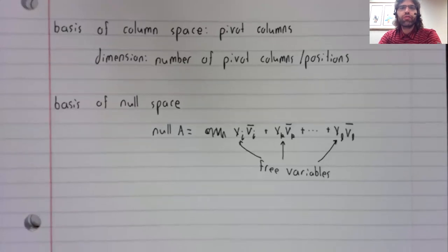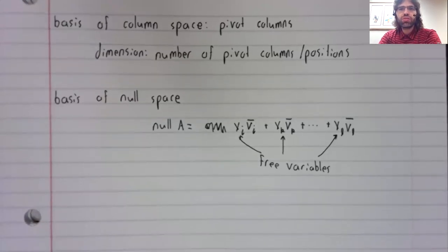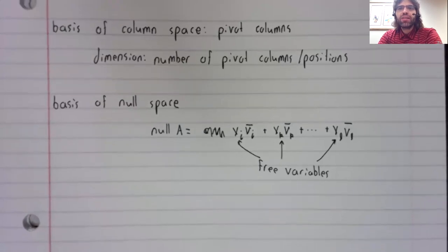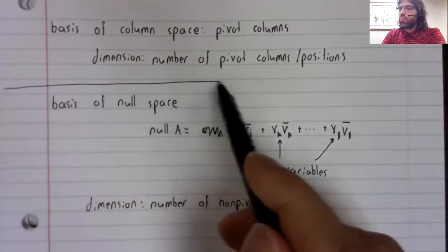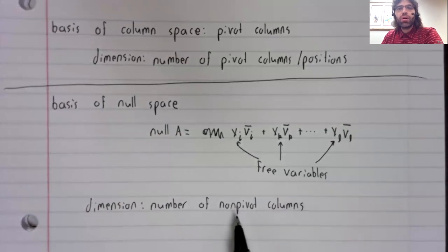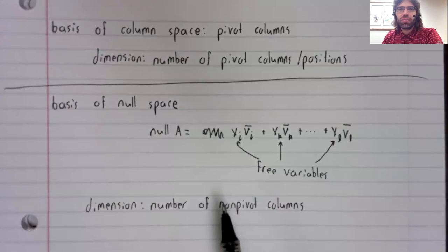are the free variables. Remembering that a variable is free if its corresponding column is not a pivot column, the dimension of a null space is the number of non-pivot columns.